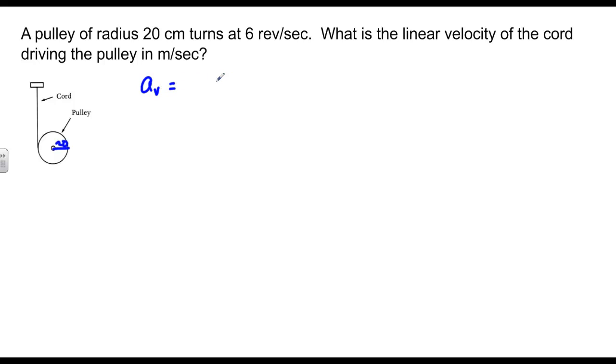Which is equal to 6 revs per second. But we know we need to convert that to radians. So I know 1 rev is 2 pi radians. Therefore, my angular velocity is 12 pi radians per second.